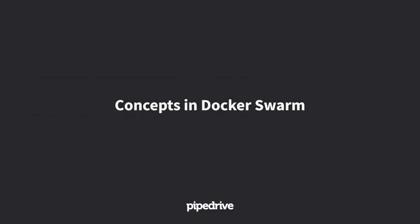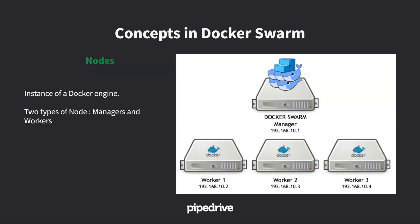Some key concepts: first, nodes. A node is any instance, server, or machine that has a Docker engine. There are two types of nodes: managers, which manage the cluster, and workers. The main purpose of the worker is to execute the workloads of your service. Best practice is to separate these — the manager should only do manager stuff, and workers handle the services you deliver to customers.